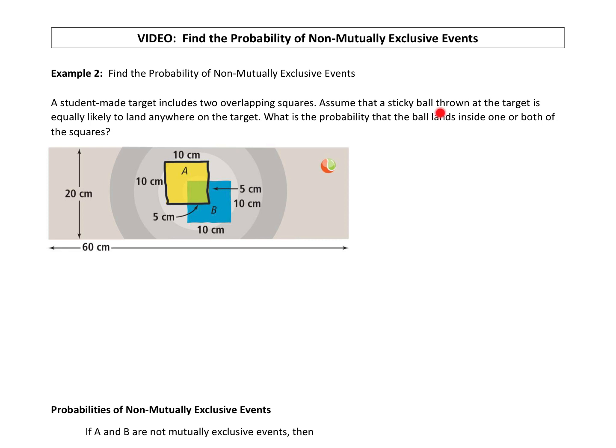Assume that a sticky ball thrown at the target is equally likely to land anywhere in the target. What is the probability that the ball lands inside one or both of the squares? For it to land in one, it could land in this only yellow section, or this only blue section, or both of the squares means this part in the middle. So essentially, what's the probability it lands inside some version of these squares?